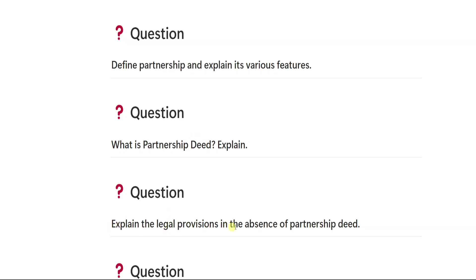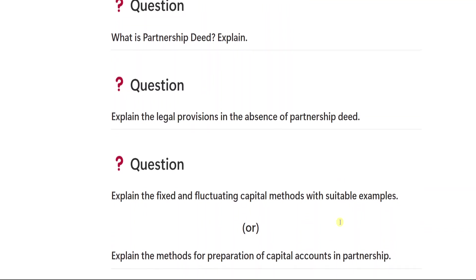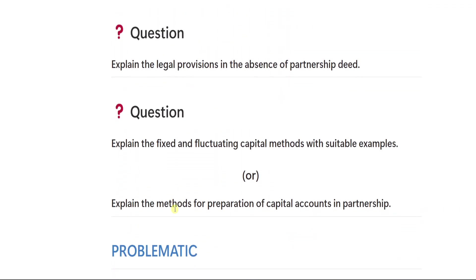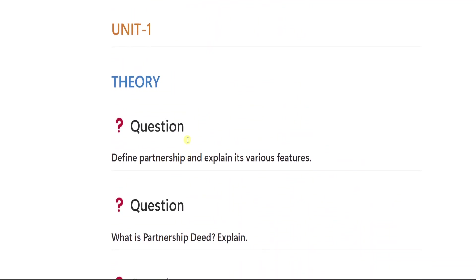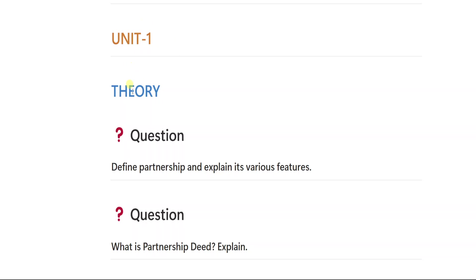Question number three is: explain the legal provisions in the absence of partnership deed — if there is no partnership deed, what are the different legal provisions? Question number four is: explain the fixed and fluctuating capital methods with suitable examples, or explain the methods for preparation of capital accounts in partnership. If they ask either of these, it is the same answer. So these are the four important theory questions from unit number one.